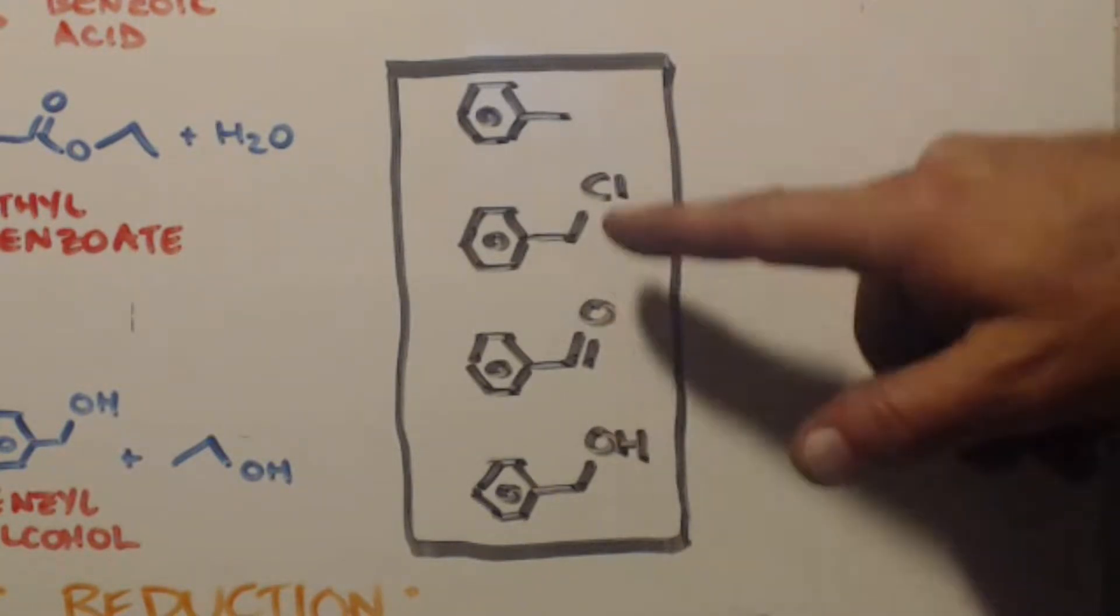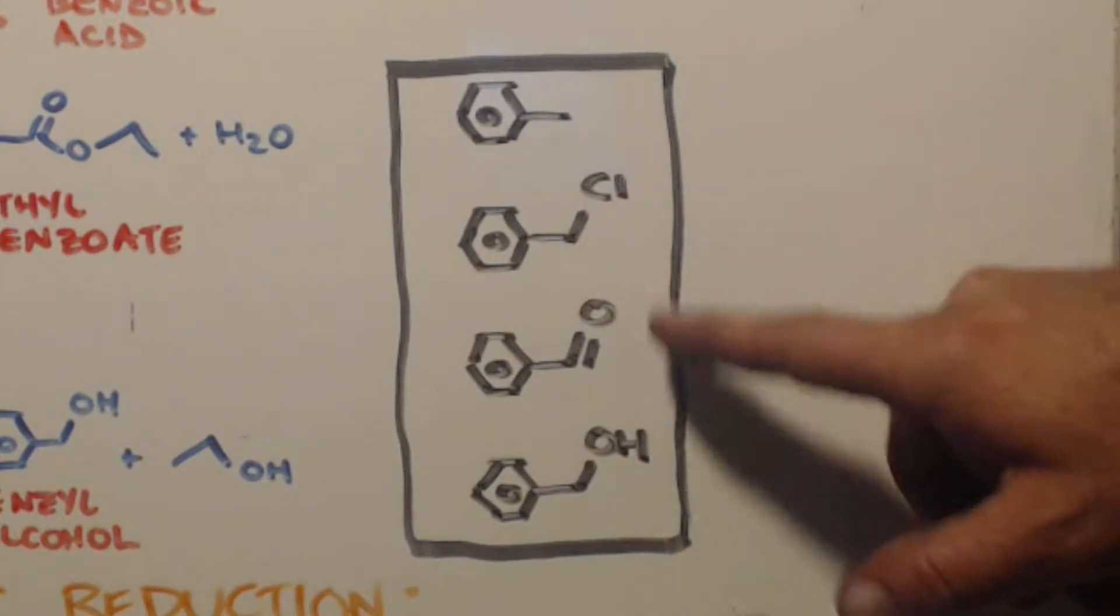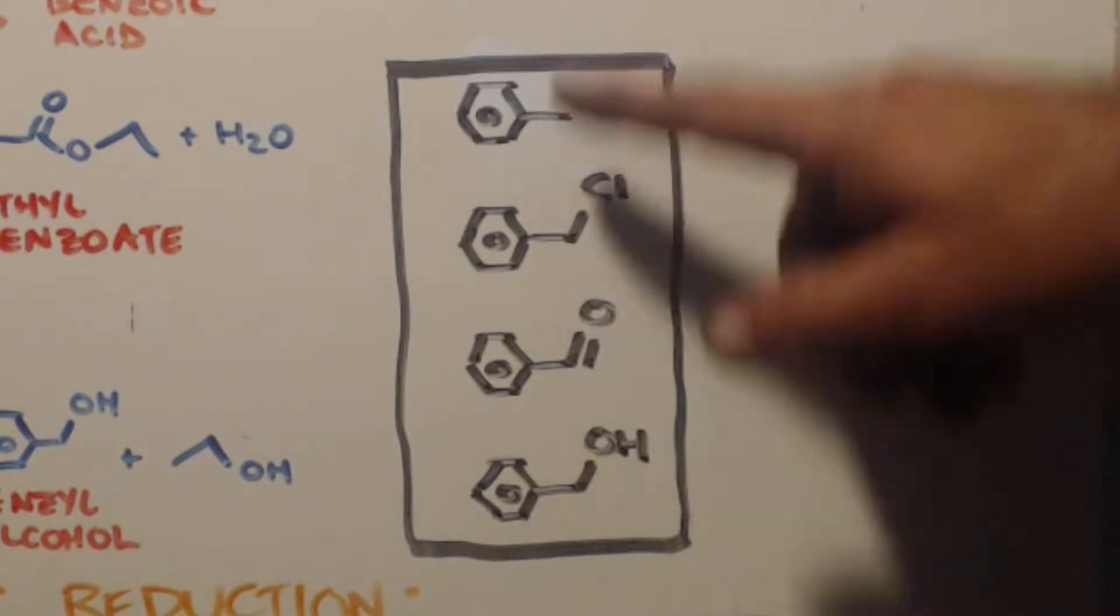If you notice, they're all toluene. This one has chlorine on it, this one has a double O on it - a carbonyl. This one has a hydroxy group, which are all toluene.